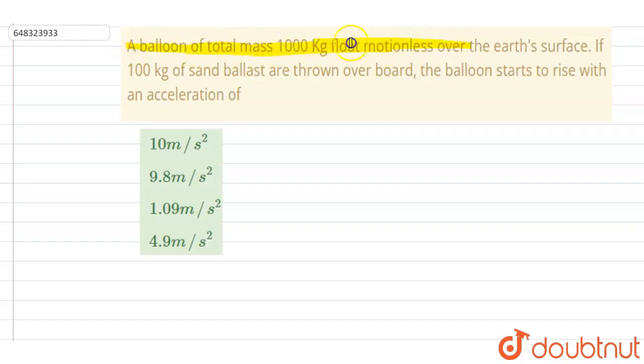A balloon of total mass 1000 kg floats motionless over the Earth's surface. If 100 kg of sand ballast are thrown overboard, the balloon starts rising with an acceleration of... So if you see, right now the net force on the balloon is zero.